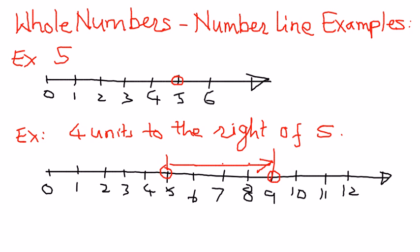So 4 units to the right of 5 is 9. On a number line, we can represent situations of this kind. If we move 4 units to the right of 5, we'll come up to a number called 9. That is how we represent numbers on this number line.